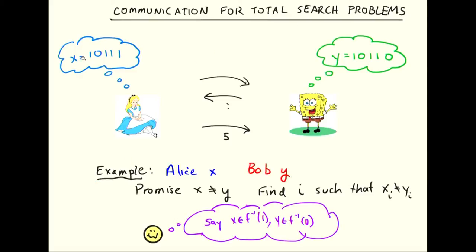I'll be interested mostly in total search problems. The first example is the Karchmer-Wigderson search problem associated with a Boolean function f. Alice gets a one-input of the function, Bob gets a zero-input, and they want to find a coordinate i where they differ. Since it's a well-defined function, there's always at least one coordinate where they differ — so their job is to find such a bit.